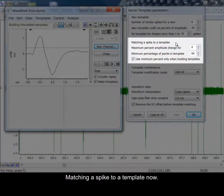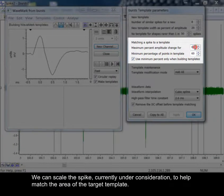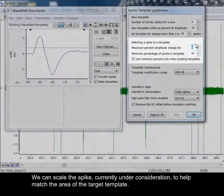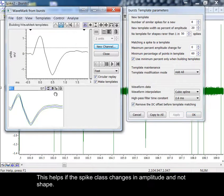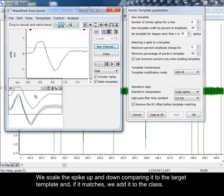Matching a spike to a template now. We can scale the spike currently under consideration to help match the area of the target template. This helps if the spike class changes in amplitude and not shape. We scale the spike up and down, comparing it to the target template, and if it matches, we add it to the class.